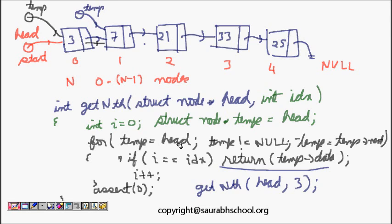Now what happens? i is 1. 1 is not equal to 3, this statement is not executed, so i++ - i becomes 2. And temp equals temp next, so temp goes to which place now? Temp comes here. Now what happens? i is 2 now. Again we are at this place. i++, so what happens now? i becomes 3 and temp equals temp next, so it comes here.